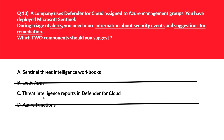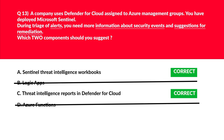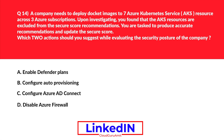Option C mentions Threat Intelligence Reports and Defender for Cloud. When Defender for Cloud identifies a threat, it triggers a security alert containing detailed information about the event, including suggestions for remediation — which is exactly what the question asks for. Looking at the community post, common use cases include threat hunting and developing alerting. Lock options A and C as the correct answers.